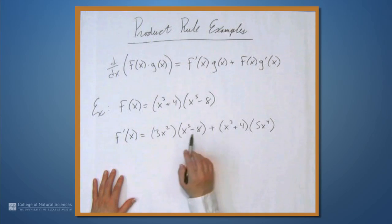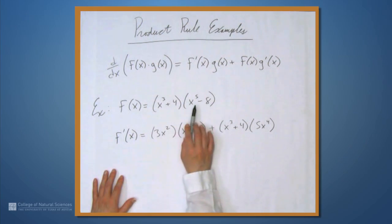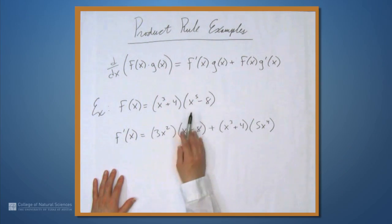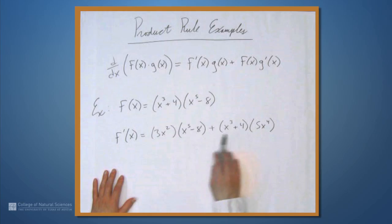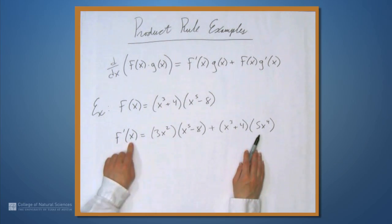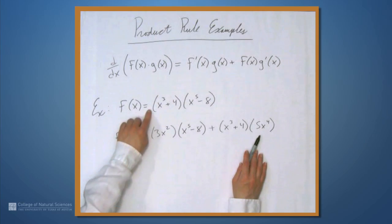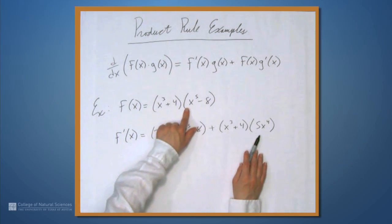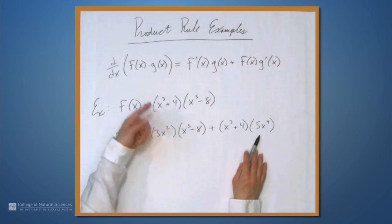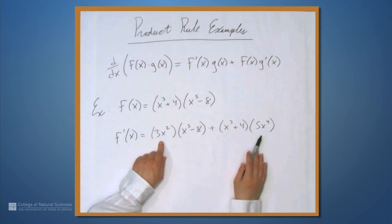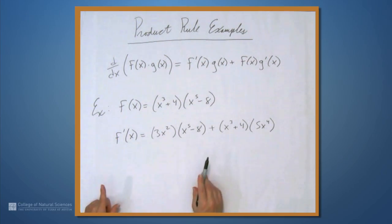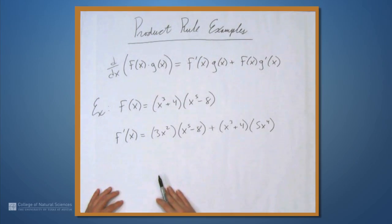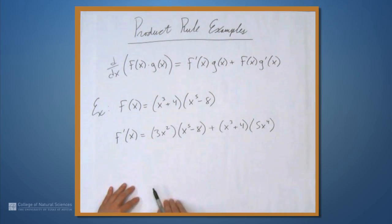It's worth noticing that you don't really need the product rule in this case, because if you expand this expression, you'll get a polynomial that you can differentiate without the product rule. But as long as you don't have to simplify, using the product rule here will save you from having to do algebra. If you had to expand first, you'd have to do algebra and then differentiate. Here we didn't have to do any of that — don't simplify, and use the product rule. Let's look at another example.